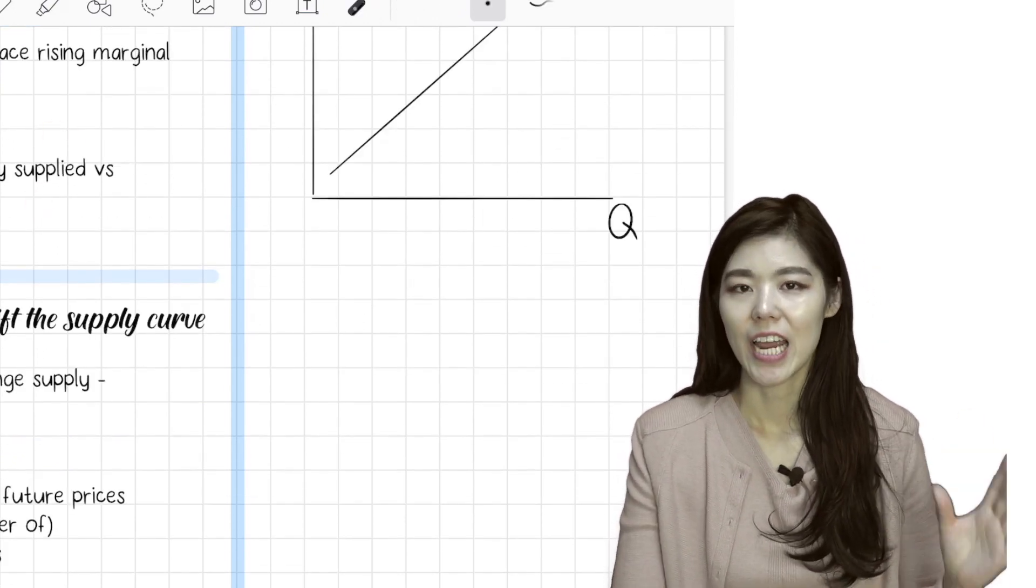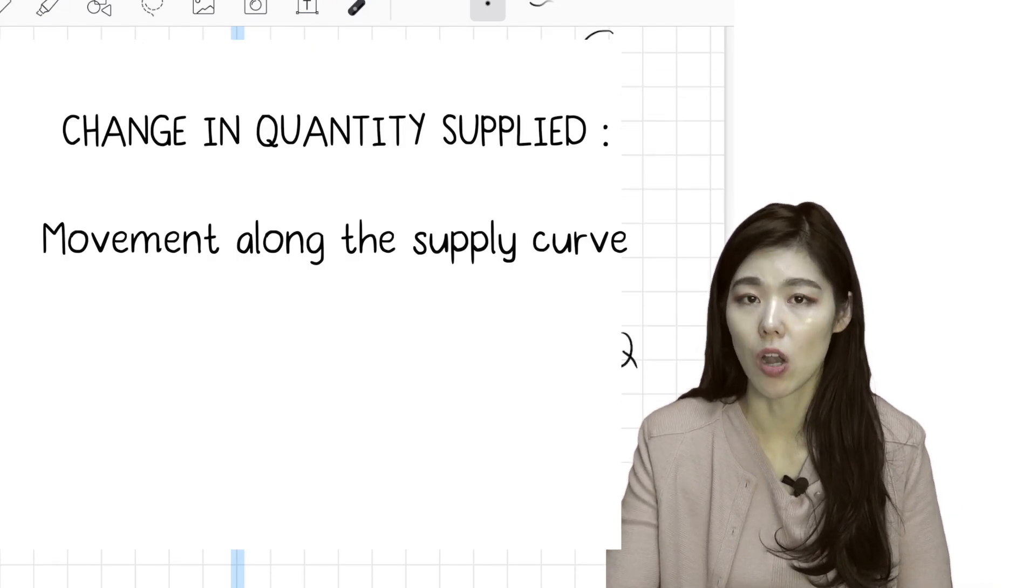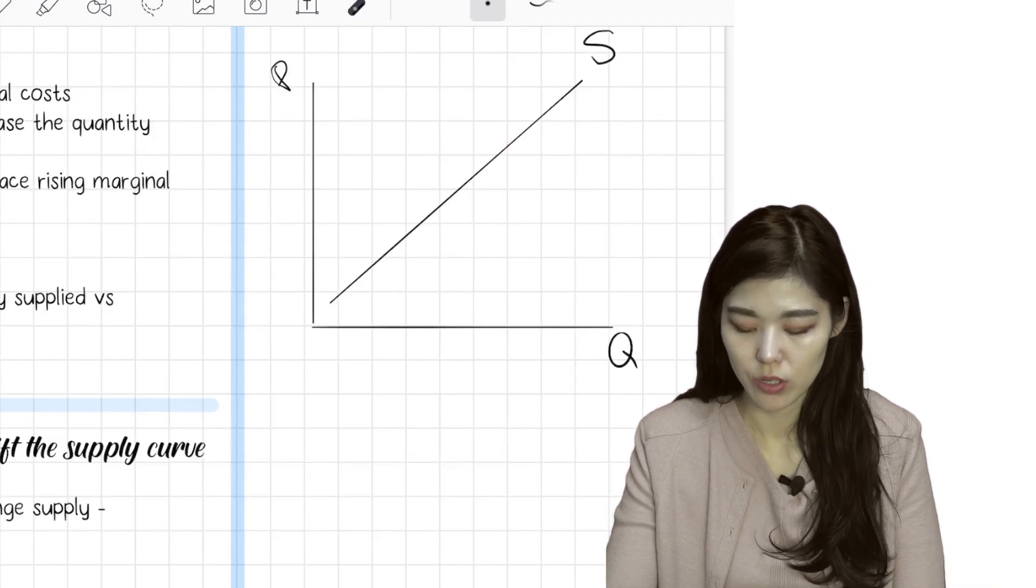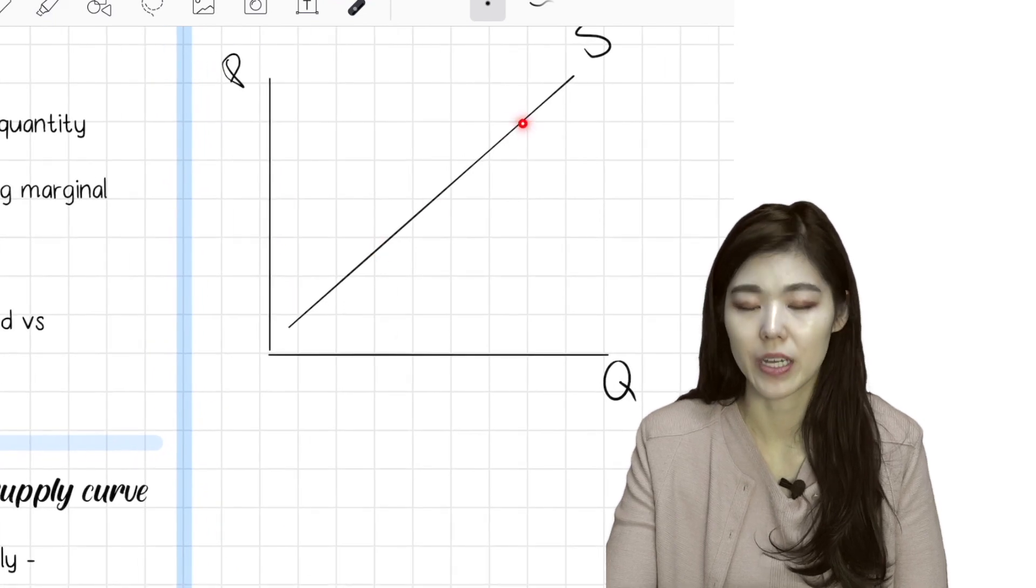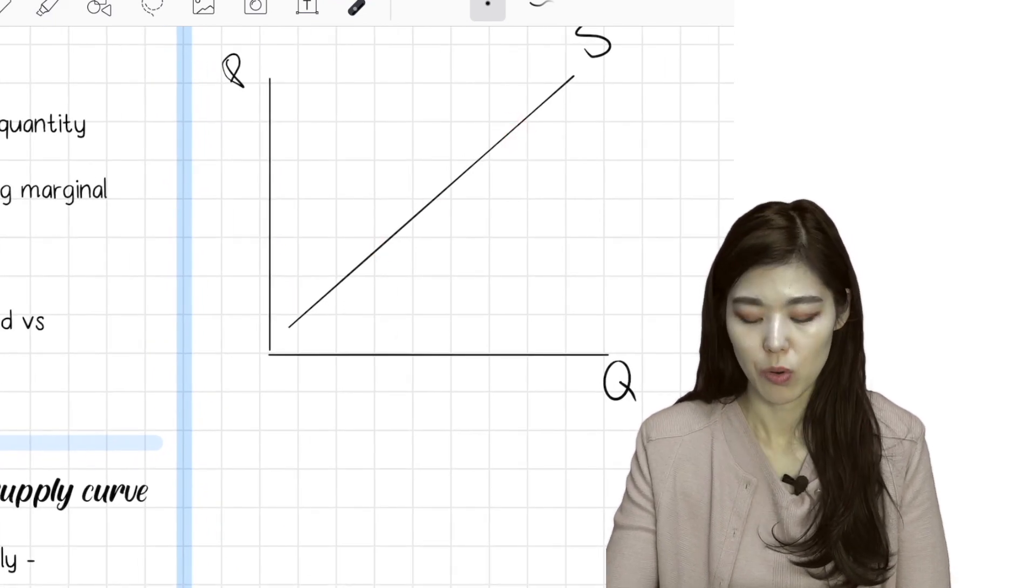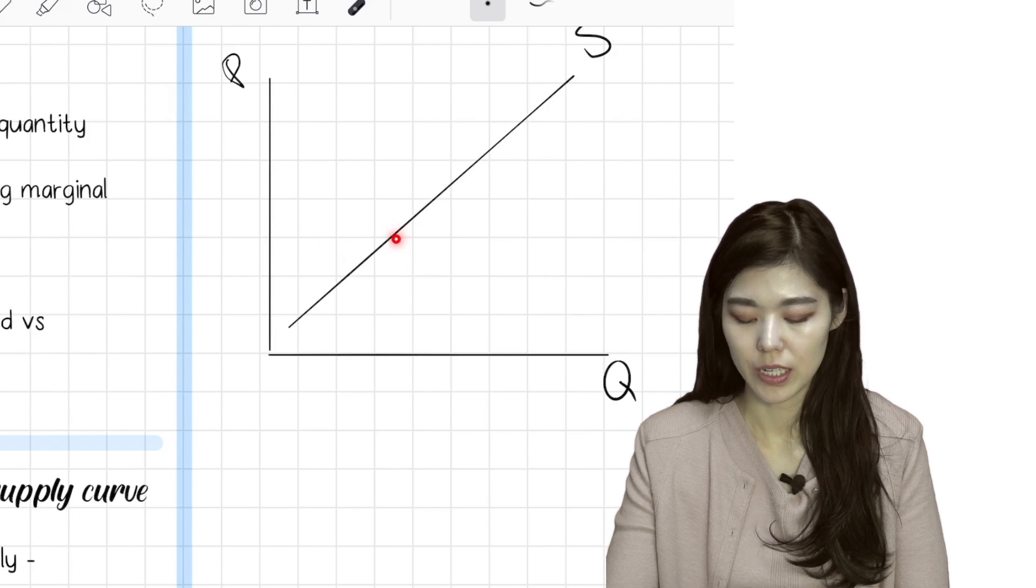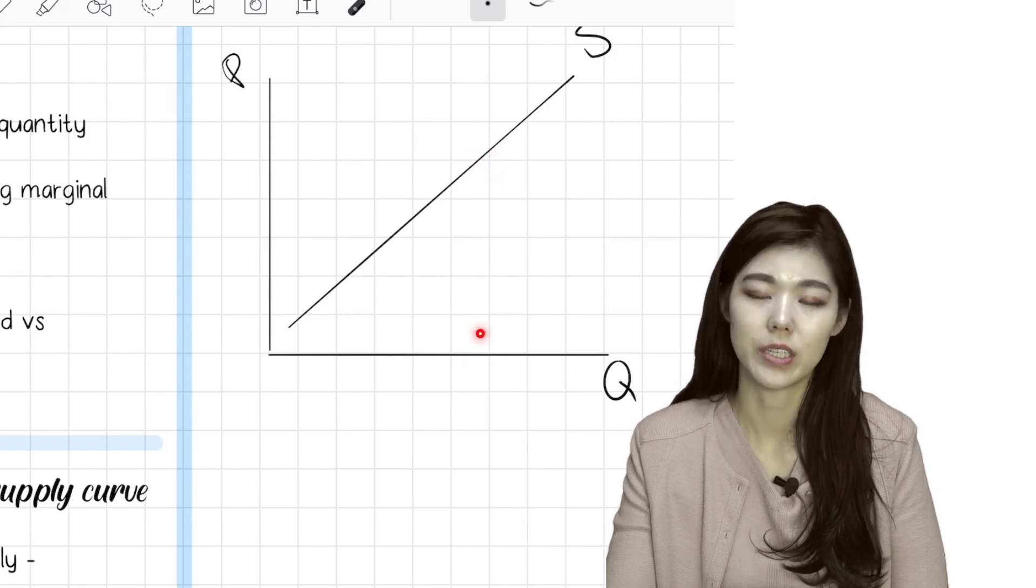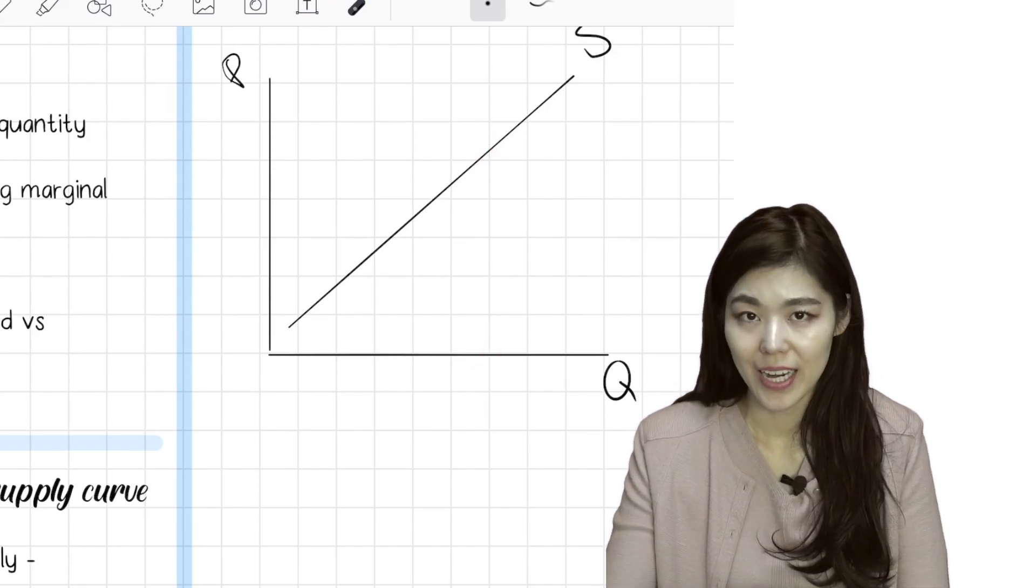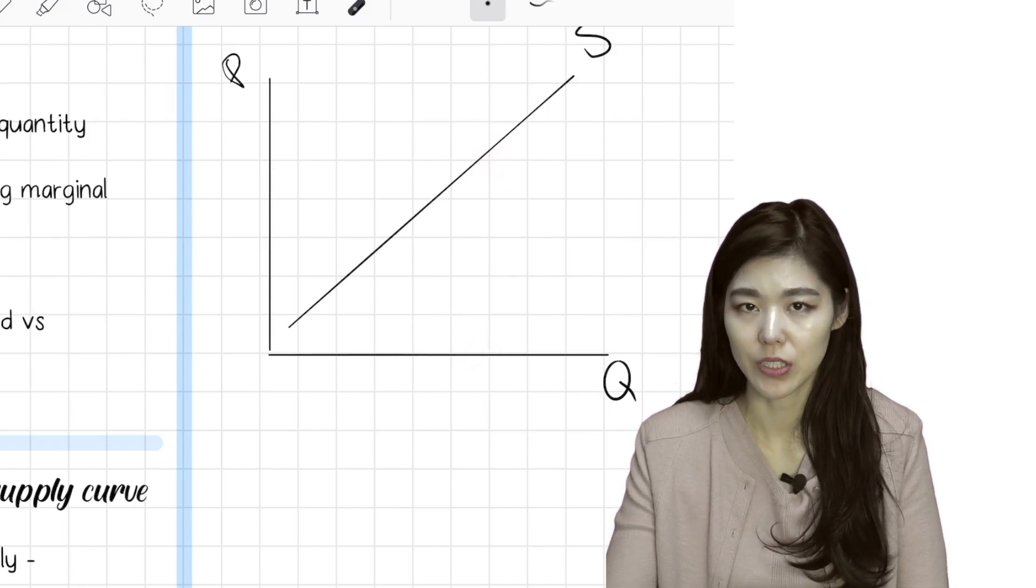Change in quantity supplied means a movement along the supply curve. So you move from here to here because of the price change. Quantity supplied at this price, maybe like 10, then the quantity is 10. Quantity supplied at $20, it would be 20. So the higher the price, the more suppliers there are, so there would be higher supply. That's changing quantity supplied.